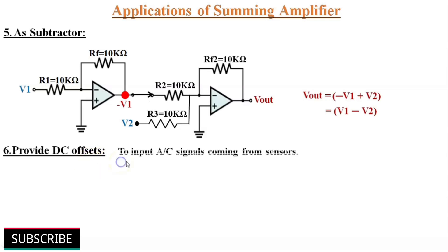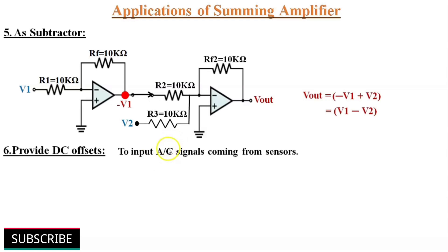Summing amplifier can also be used to provide DC offset to an input signal. Suppose the input voltages are AC signals coming from some sensors; by using the summing amplifier we can also apply DC offsets to the incoming signals.